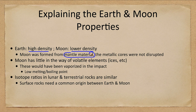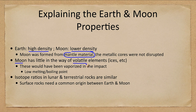The metallic cores were not disrupted — in fact they combined together, making the Earth unusually dense. The Earth is denser than it should be for its place in the solar system. The moon has little in the way of volatile elements, such as icy material.